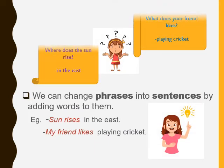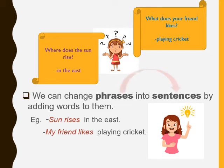Let's take a few more examples. Where does the sun rise? In the east. What does your friend like? Playing cricket. We can change phrases into sentences by adding words to them.